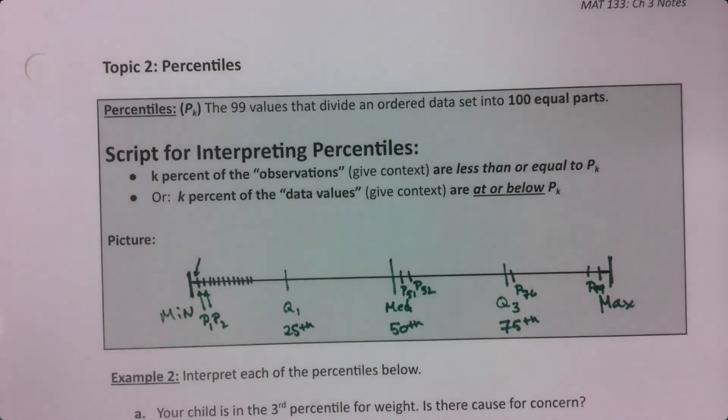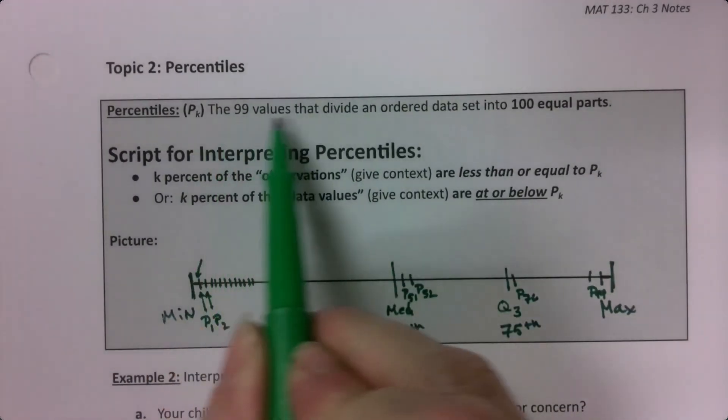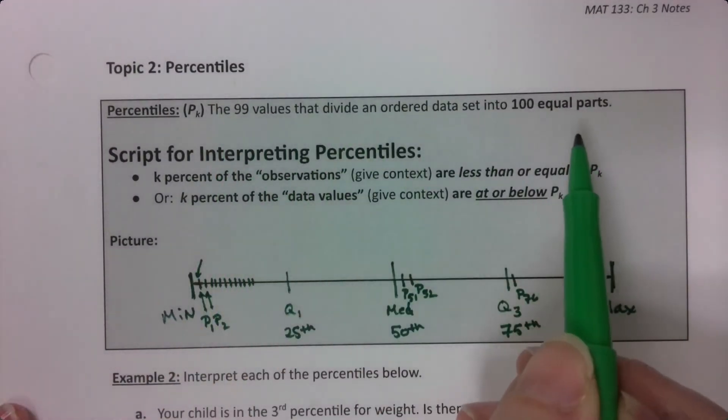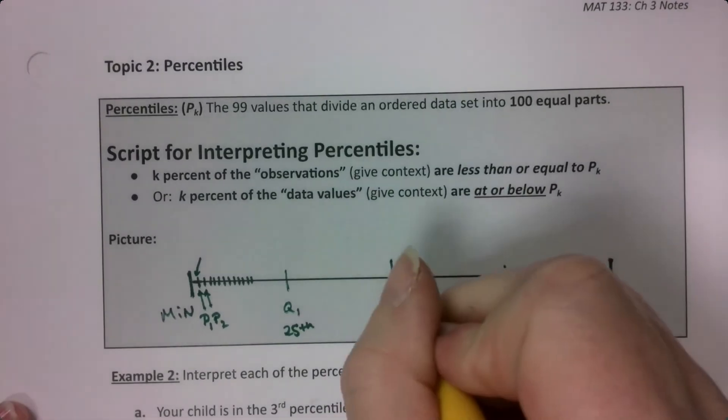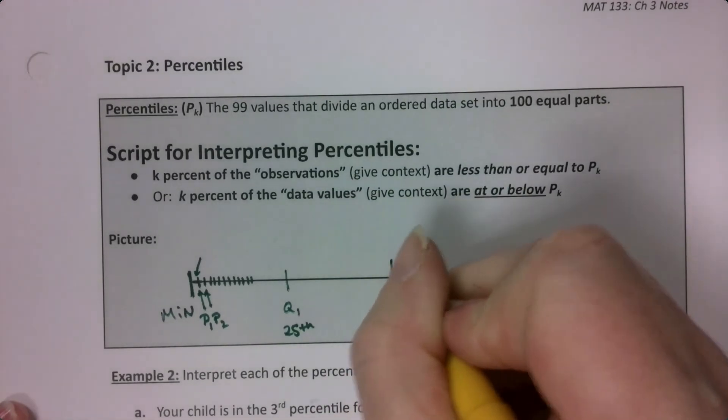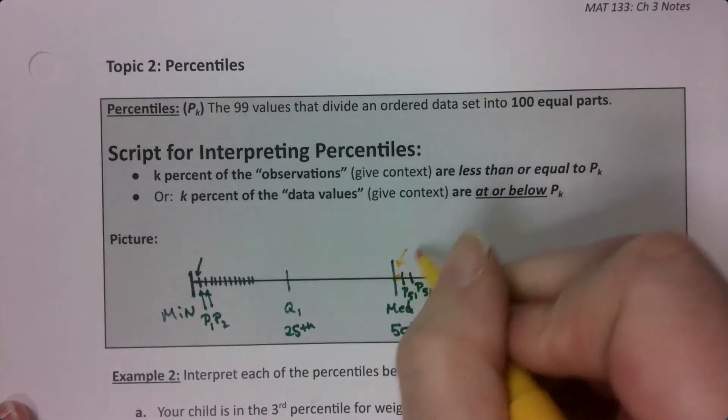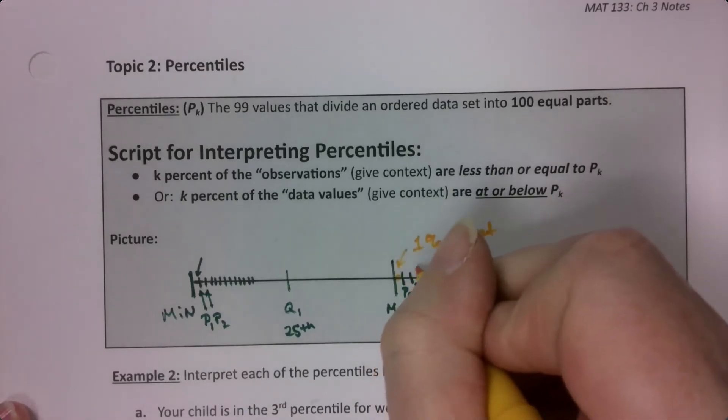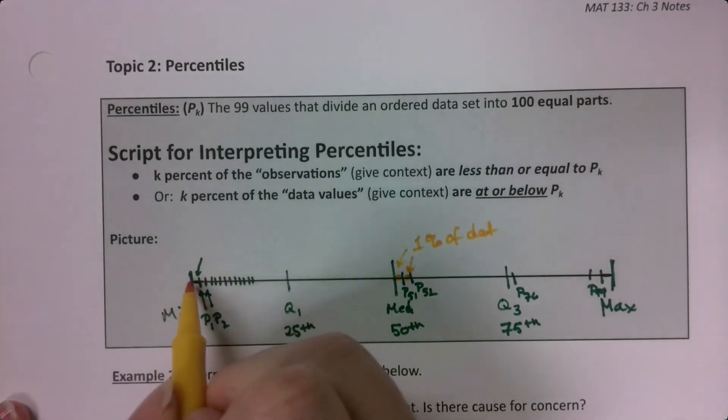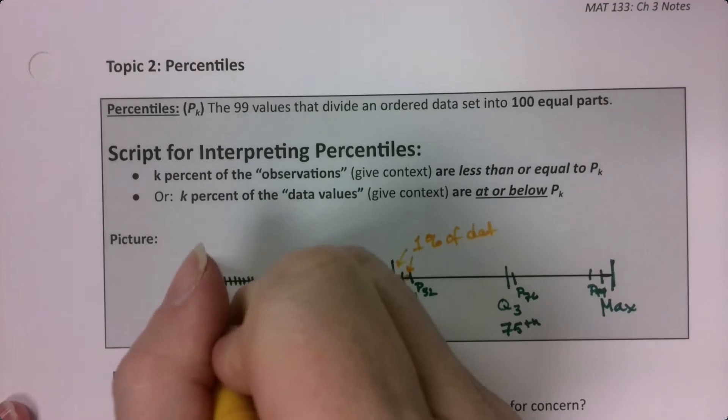There's 99 markers that separate the data set into a hundred equal pieces. So there's 99 values that separate the data into a hundred equal parts. In each of these little sections that you see, each little section from here to here has a single percent of the data. In every little bit, one percent there, one percent there. It's between the markers. So there's one percent right there and another one percent right next to it.